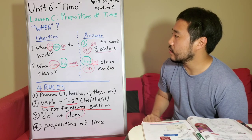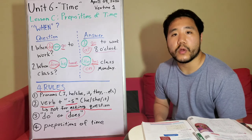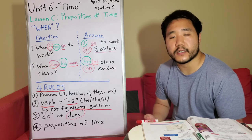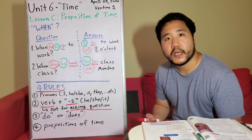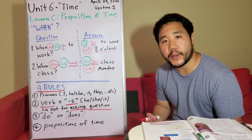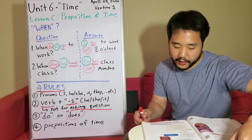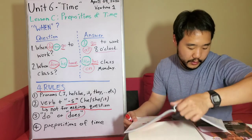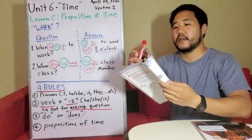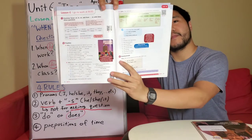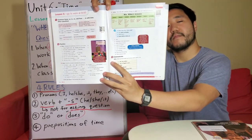Now we will go over exercises 2A, 2B, and 2C on pages 74 to 75 of the Venture Student Book. Thank you.